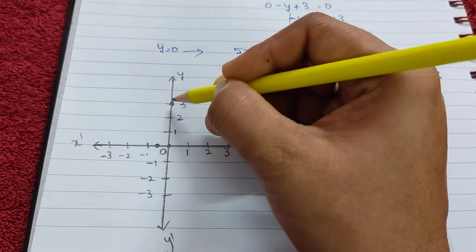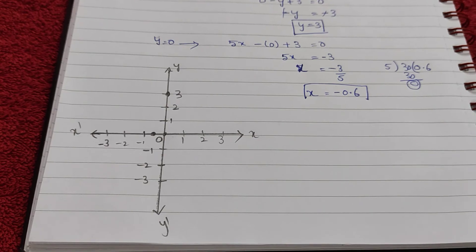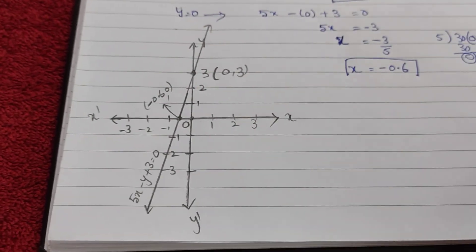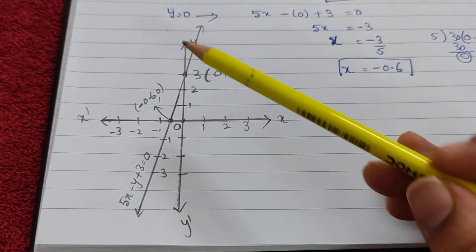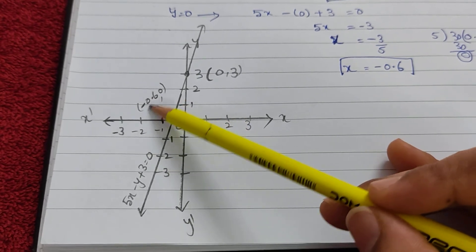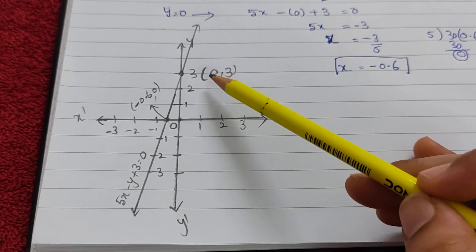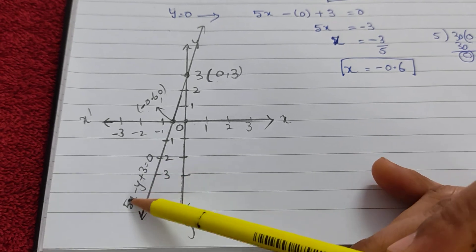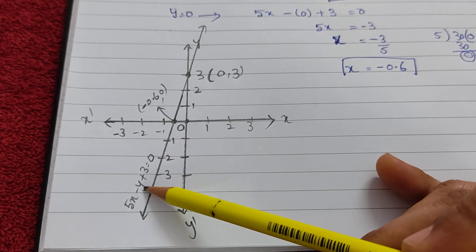Now see the graph. I connected these two points. This point is minus 0.6 comma 0, and this is 0 comma 3. This is the equation 5x minus y plus 3.